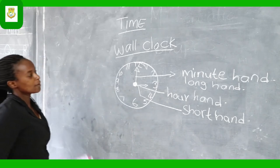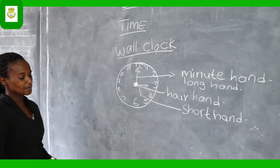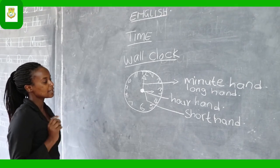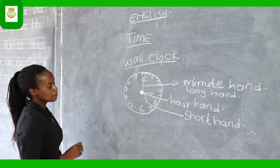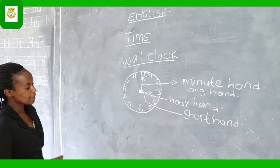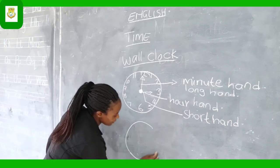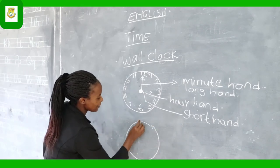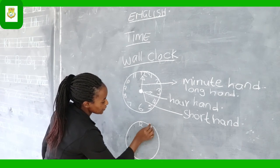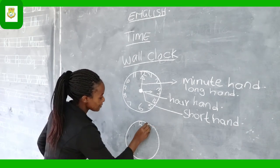So when you are looking at the clock, this is how we start. We start by looking at the time — how we tell time. For example, when you are asking what the time is, you can have your clock like this, and we have said that you have to indicate the numbers.